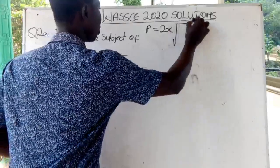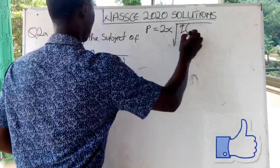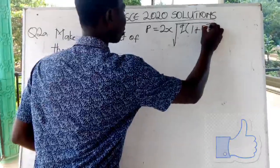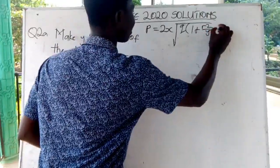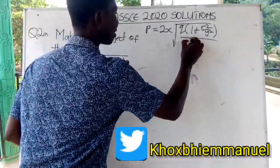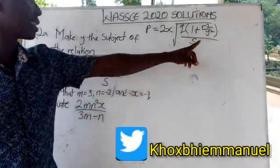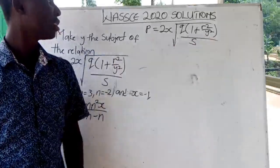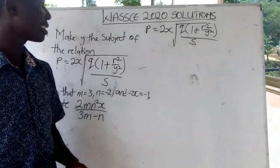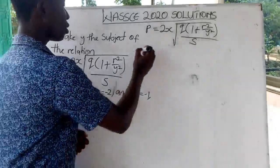We have P equal to 2x times the square root of Q into one plus r squared over y squared, all over s. Now we have to make y the subject here. So what I would do first is we are going to square both sides to remove the square root.